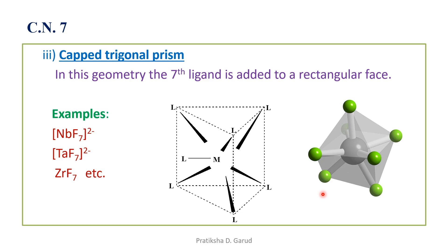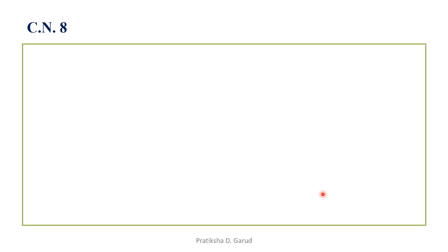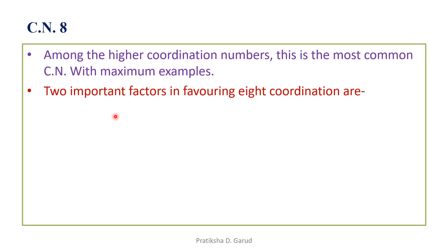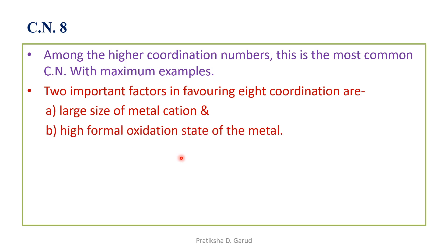So for coordination number seven we have three possible geometries. Now for coordination number eight — among the higher coordination numbers, this is the most common, with the maximum number of examples. Two important factors favor eight-coordination: the larger size of the metal cation and a high formal oxidation state of the metal.